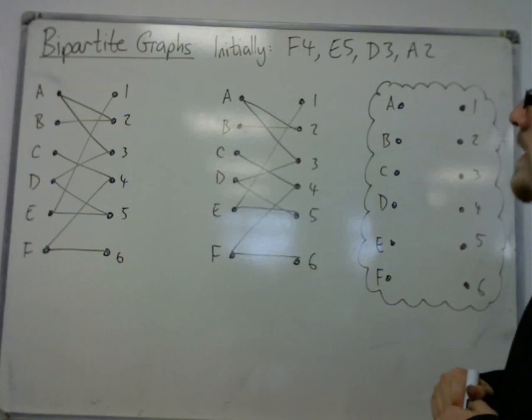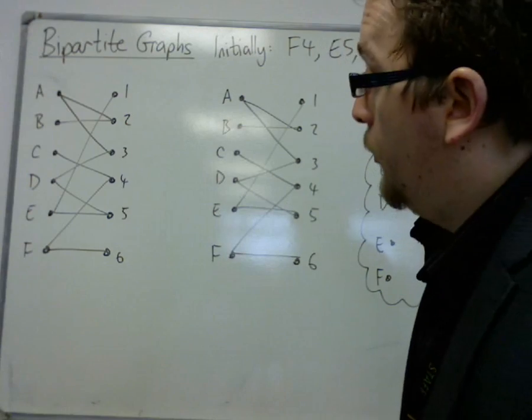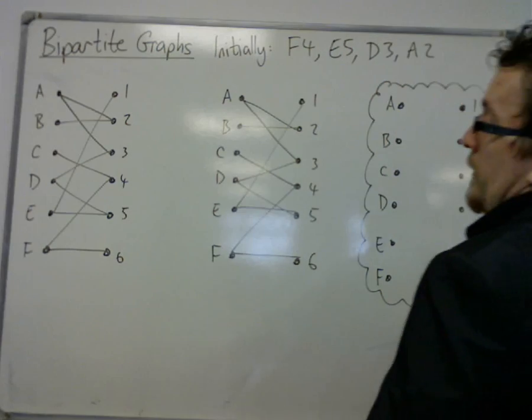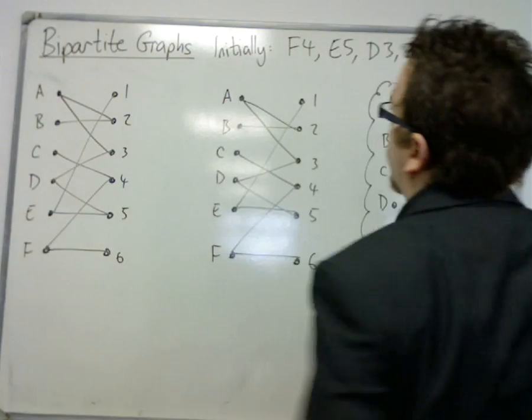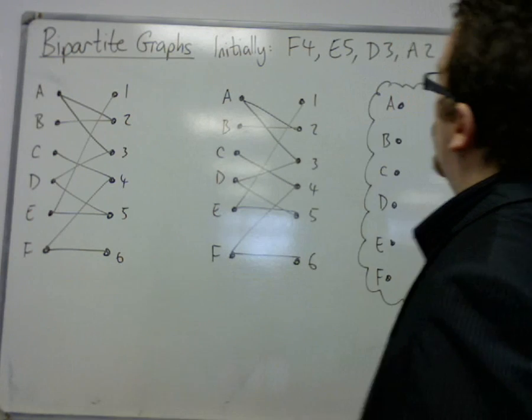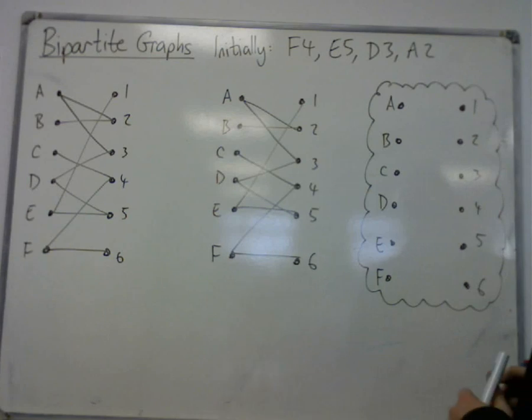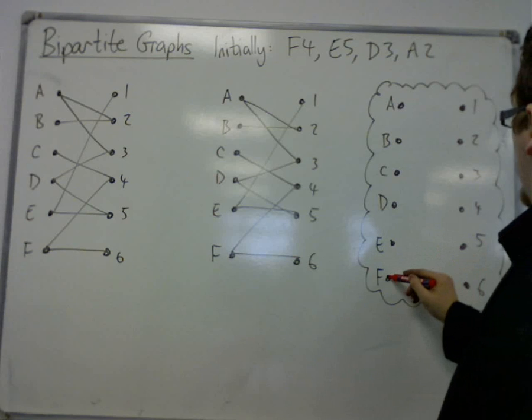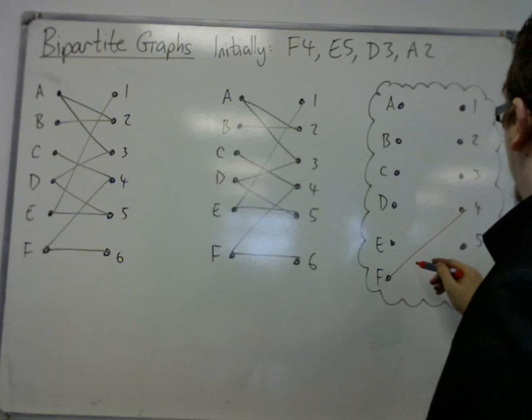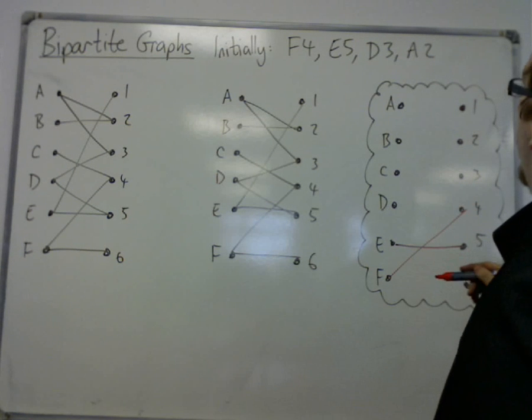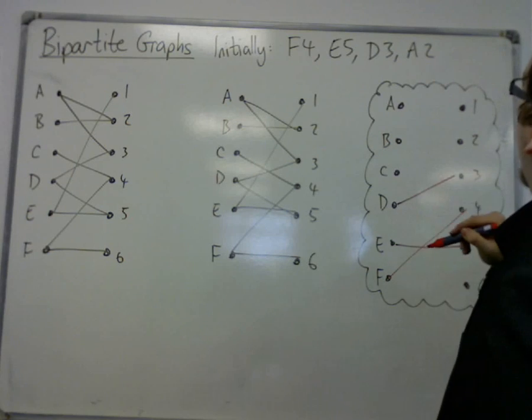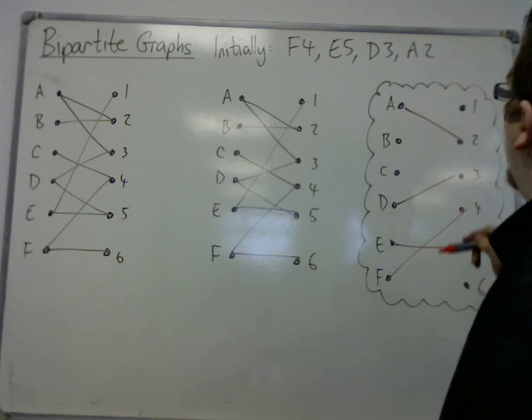So initially, in this case, we've got six workers and six tasks, and initially we've got four matchings made. We've got f being attached to 4, e to 5, d to 3, and a to 2. That's my initial matching.